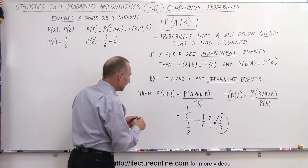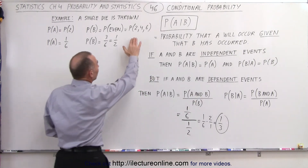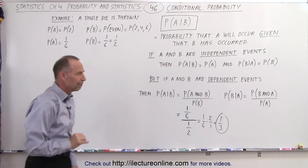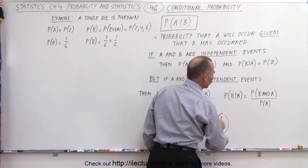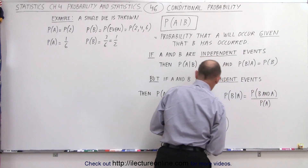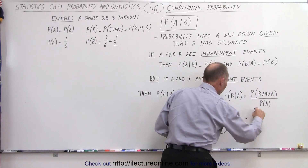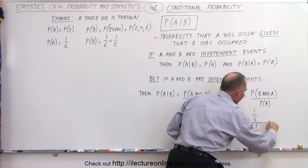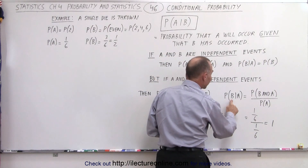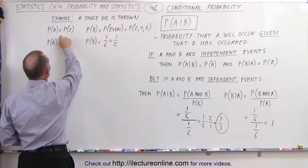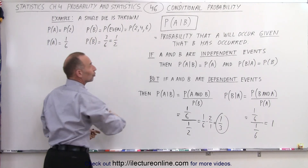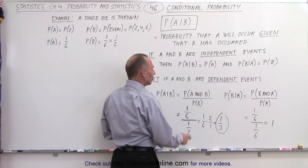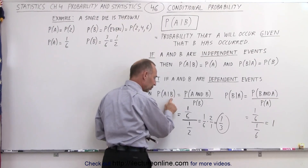So there's a 1/3 probability that A will occur once we know that B has occurred. That makes sense because once B has occurred, the number is either 2, 4, or 6, and 2 is only 1 out of those 3 possibilities. Now, the probability that B will occur given that A has occurred: P(B and A) is also 1/6, divided by P(A) which is also 1/6, giving us 1 — a 100% chance. That makes sense because if A has occurred, we got the number 2, and since 2 is even, we're certain we also have an even number.